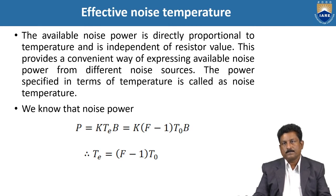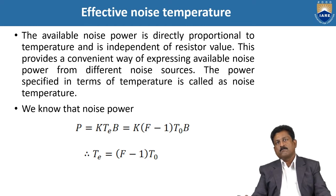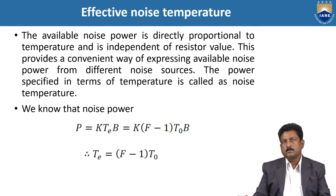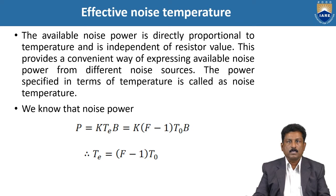Now, effective noise temperature. The available noise power is directly proportional to temperature — noise generated by a source is always proportional to temperature. This unwanted signal is proportional to temperature whether it is inside or outside the circuit. If temperature increases, the noise increases; if temperature decreases, the noise decreases. The available noise power is directly proportional to temperature and is independent of the resistance value. This provides a convenient way of expressing available noise power from different noise sources. The power specified in terms of temperature is called noise temperature.